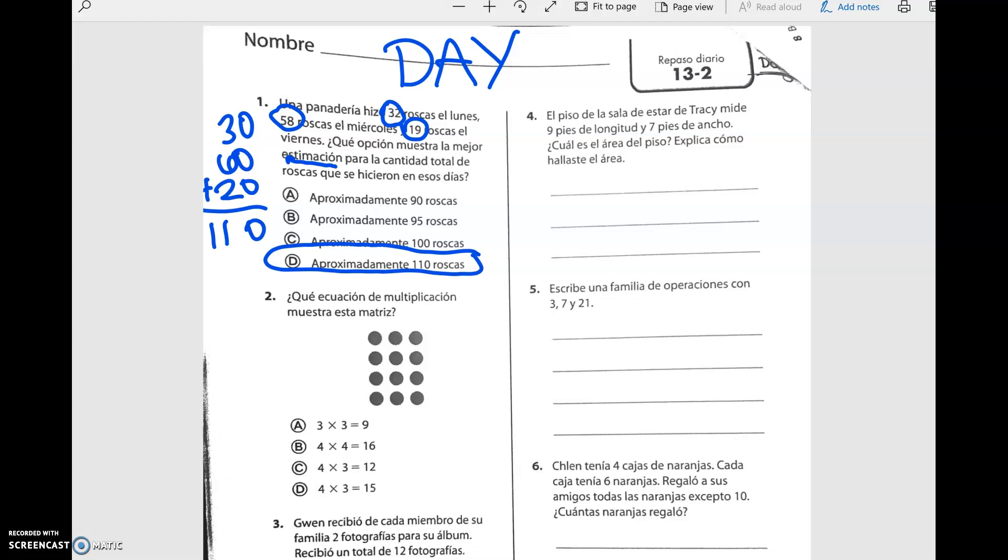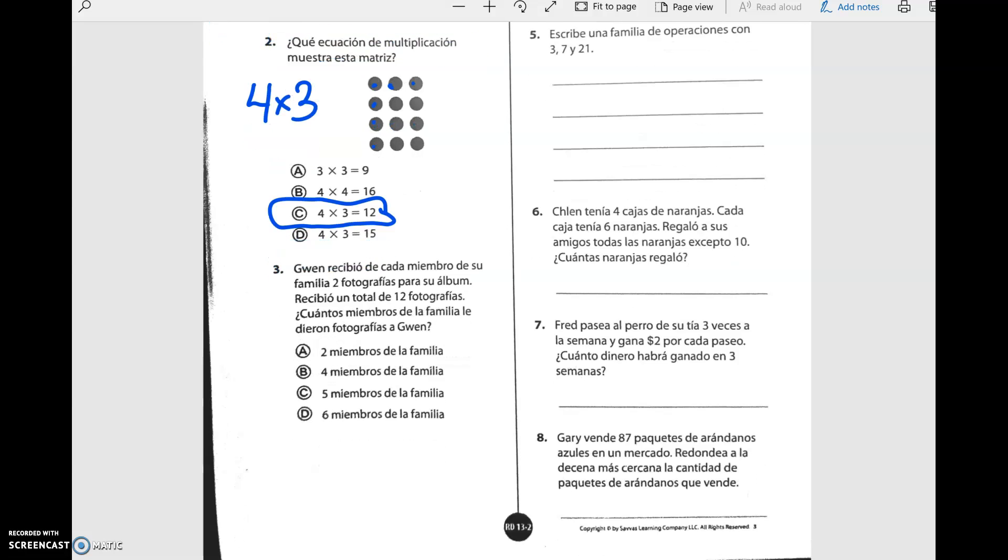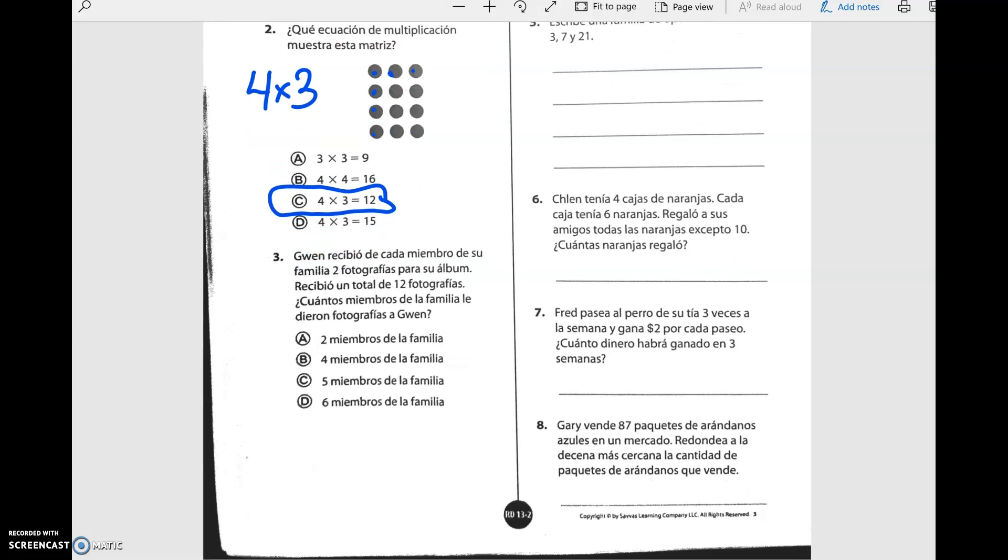¿Qué ecuación muestra esta matriz? Tenemos cuatro filas por tres en cada grupo, que es igual a 12. They didn't even try to trick you there, which was nice. They didn't put three times four. Número tres. Gwen recibió de cada miembro de su familia dos fotografías para su álbum. Recibió un total de 12 fotografías. ¿Cuántos miembros de la familia le dieron fotografías a Gwen?